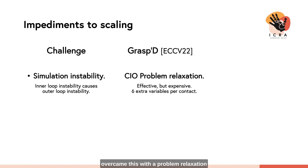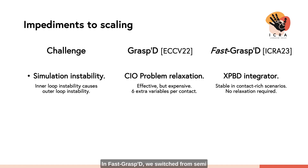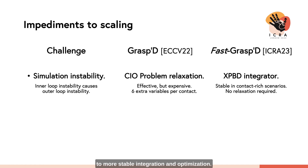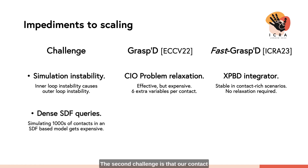The first factor is that our simulation was unstable — inner loop simulation instability caused outer loop optimization instability. In Grasped, we overcame this with a problem relaxation inspired by contact-invariant optimization. This worked well but was expensive and introduced many new variables. In FastGrasp, we switched from semi-implicit Euler to XPBD, which is known for stability in contact-rich scenarios, leading to more stable integration and optimization. This let us drop the relaxation and the extra variables.